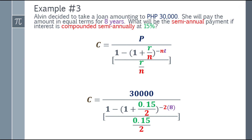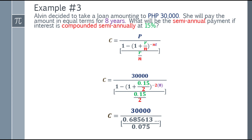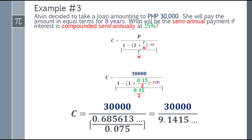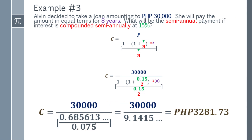For R over N at the bottom, that will be 0.15 over 2. Let's simplify further. In the denominator below 30,000: simplify 1 minus (1 plus 0.15 over 2) raised to negative 2 times 8 or negative 16. Then 1 minus that result gives 0.685613 and so on. Next, 0.15 over 2 gives 0.075. Then 0.685613 divided by 0.075 gives 9.1415 and so on. And lastly, 30,000 divided by 9.1415 gives 3,281.73 centavos.